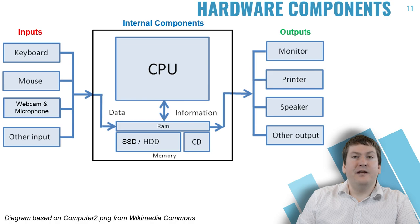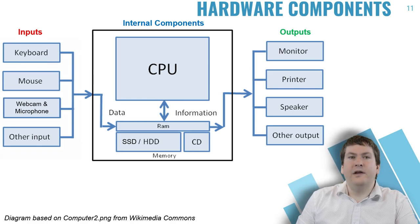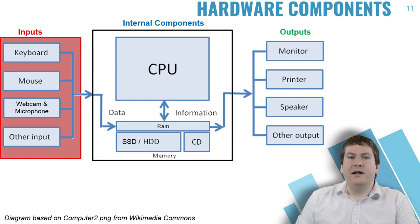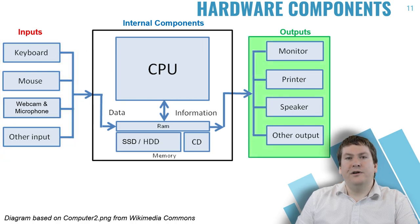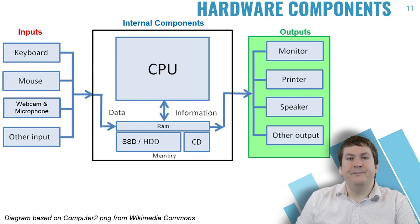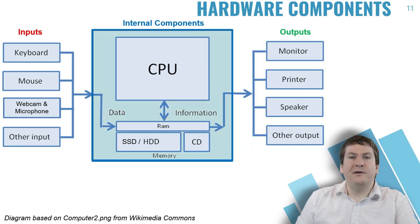Here is a diagram showing the basic hardware components of your computer, divided into three types: inputs, outputs, and internal components. Inputs are the hardware that allow you to input data — such as a keyboard, mouse, webcam, or microphone — and can be external or built in. Outputs are hardware devices that output information from your computer, such as monitors, printers, and speakers. Internal components are the parts found inside the computer that do the job of processing data into information based on software instructions.